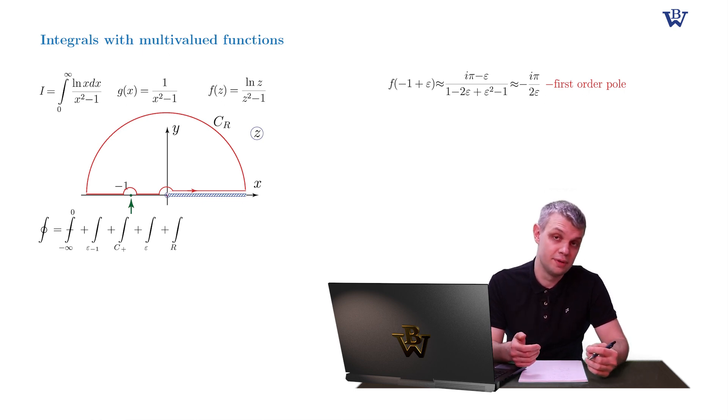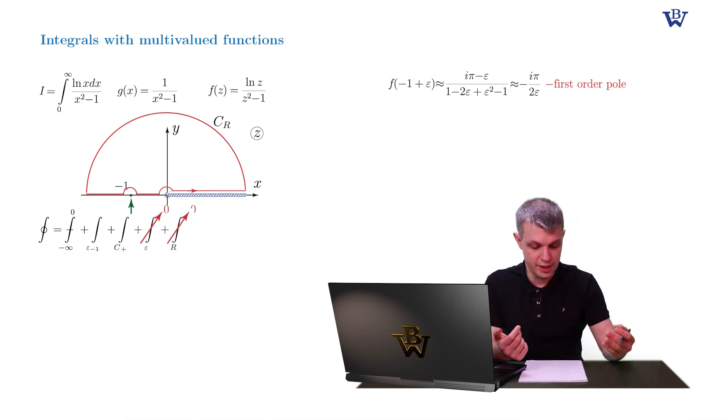So this time we have three semicircle integrals. So make a guess which one of them doesn't vanish. Well obviously the integral around point z equals negative 1 is special, because the function itself has a pole there. So I leave it up to you to prove that the integrals around the origin and around the large semicircle actually vanish.